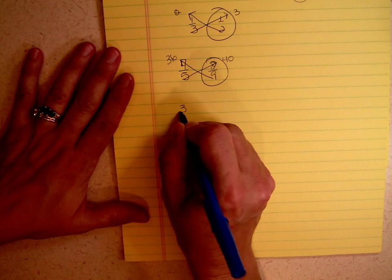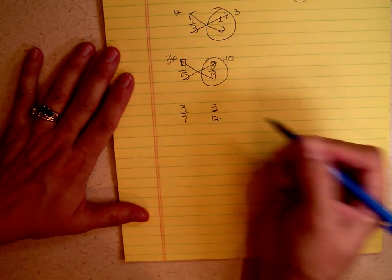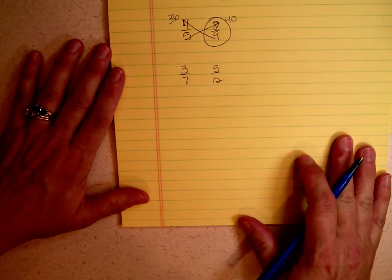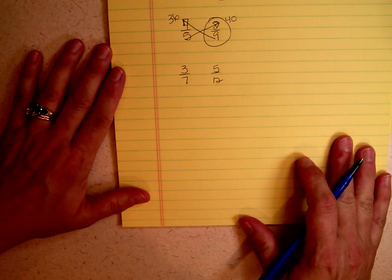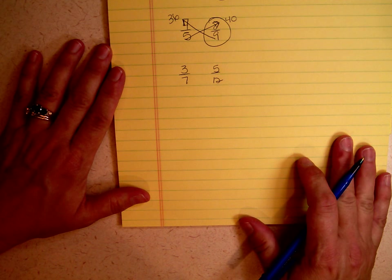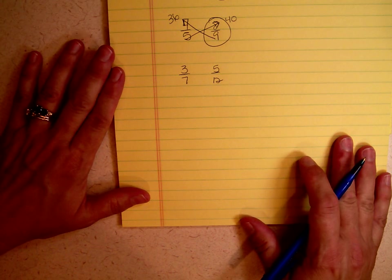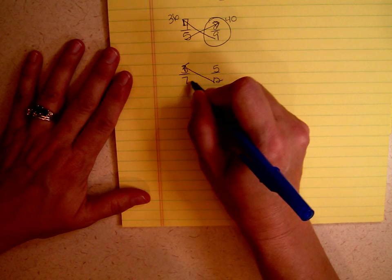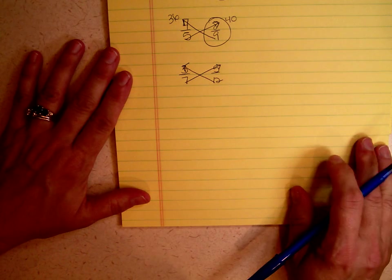Another practice problem: 3 sevenths and 5 twelfths. You try that one. I'll give you a minute. Let me give you a little hint. I'll just draw my little arrows.